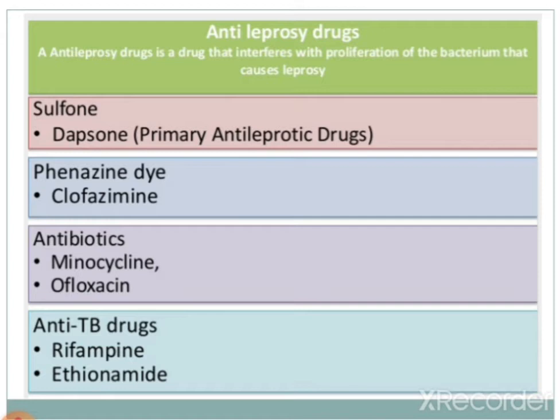The second category is the phenazine dye — example: clofazimine. The third is antibiotics, specifically minocycline from the tetracycline class and ofloxacin from the antibacterial quinolone class. The fourth category is anti-TB drugs, which we have already studied; rifampicin and ethionamide are the useful agents here.